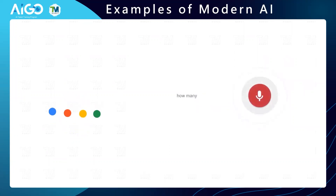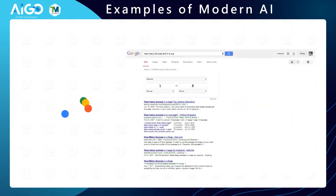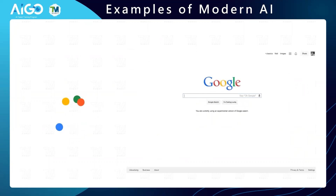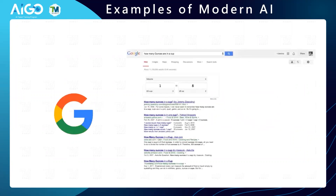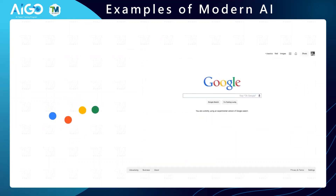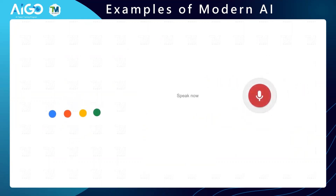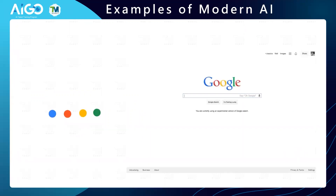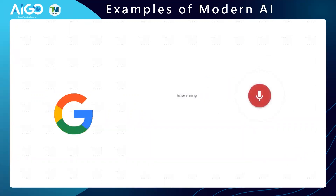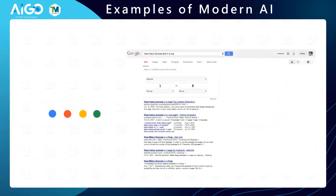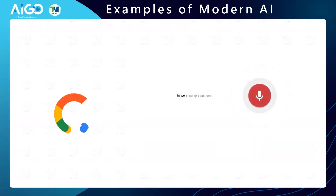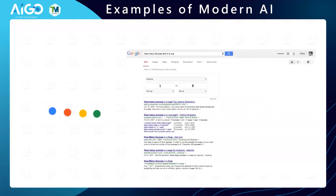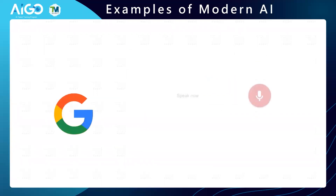The first and most famous application I'd like to introduce is Google. Google has a rich history in using artificial intelligence, and it's one of the largest companies in the world in the field of information and technology. You would assume that Google uses almost anything with AI.